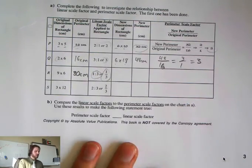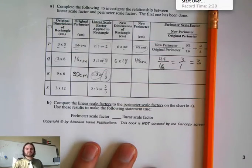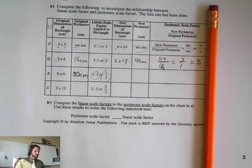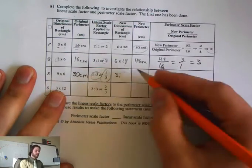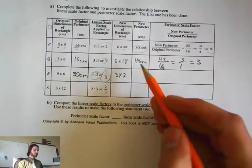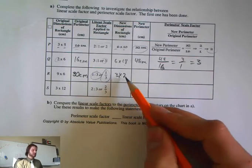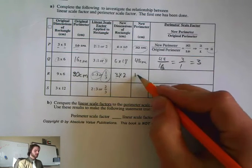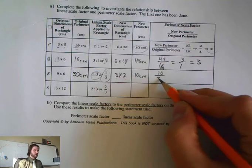My scale factor is only 1 third, so we have to go 9 divided by 3 which is 3, and 6 divided by 3 which is 2, so it's a 3 by 2. Now we want to find the perimeter, so that's 3 times 2 is 6, plus 2 times 2 is 4, which gives me a total of 10 centimeters.